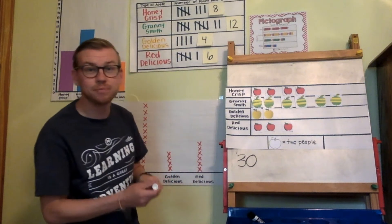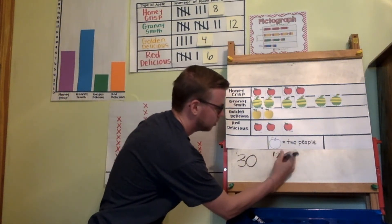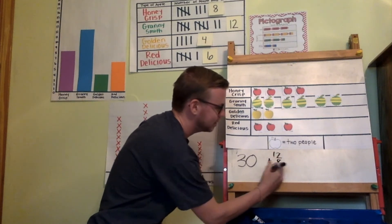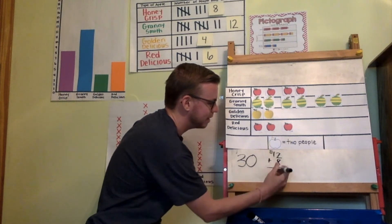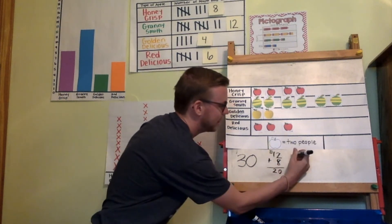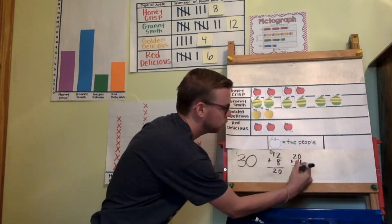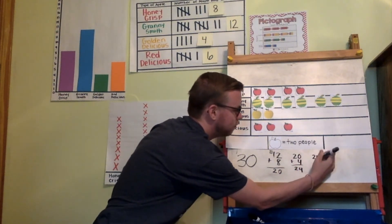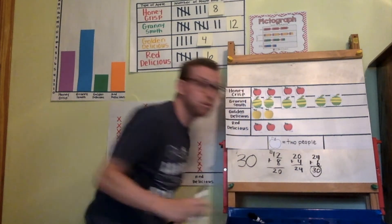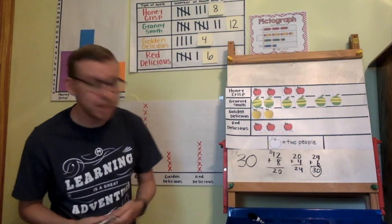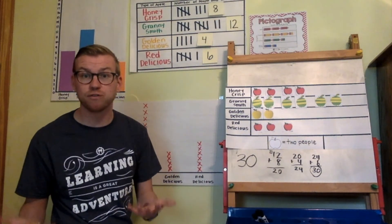We can also do the addition: twelve plus eight — eight plus two is ten, carry a new ten to make twenty. Then twenty plus four equals twenty-four. And twenty-four plus six equals thirty. So you can use your graphs to determine how many people were surveyed, or you can use basic addition, whatever you prefer.